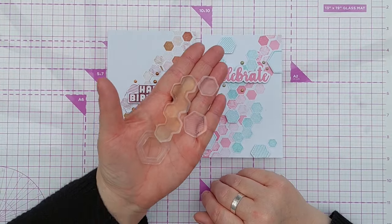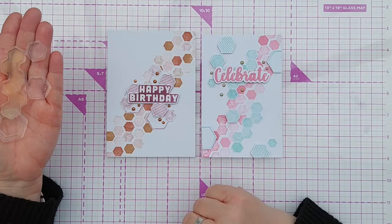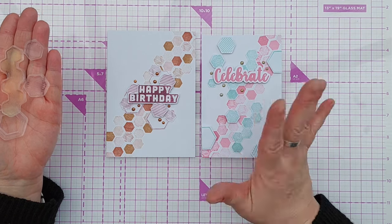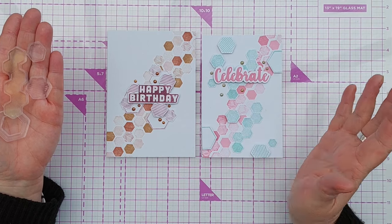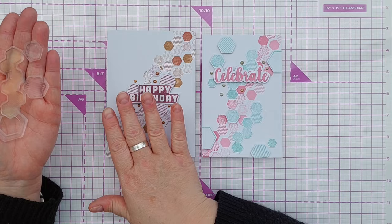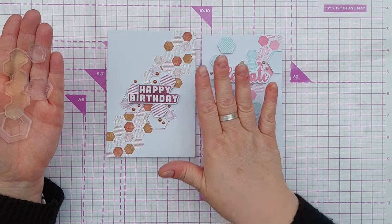Here I have two cards that are made using a selection of the hexagon stamps. They're made using the same design principles, the same techniques more or less but I've got two very different vibes. I've got an earthy vibe here and a light and airy vibe here.